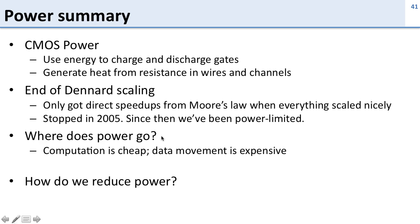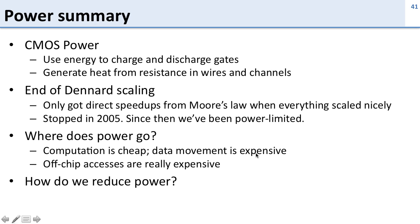We talked about where power goes in a processor and saw that the computation itself — doing the actual math — is cheap. The expensive part is really data movement. We saw that both in terms of moving data on a chip and the amount of energy we're spending in caches. And remember, off-chip accesses — if you have to go off the chip to DRAM to get data — it's extremely expensive in terms of energy.